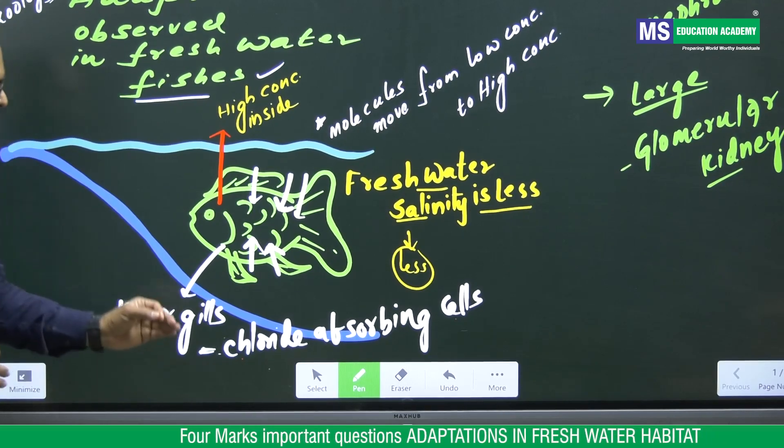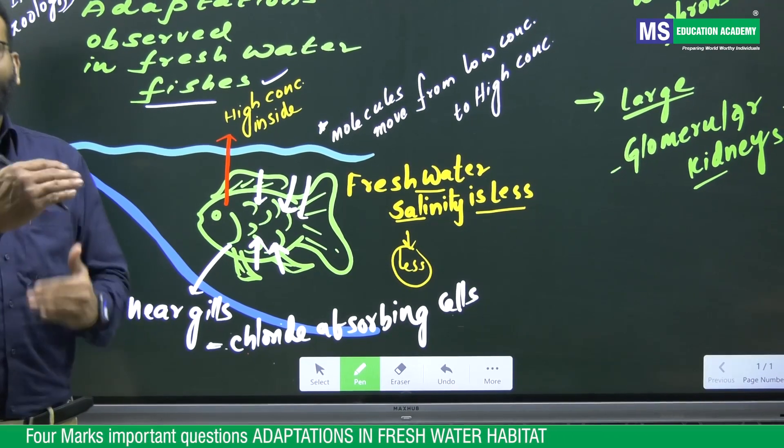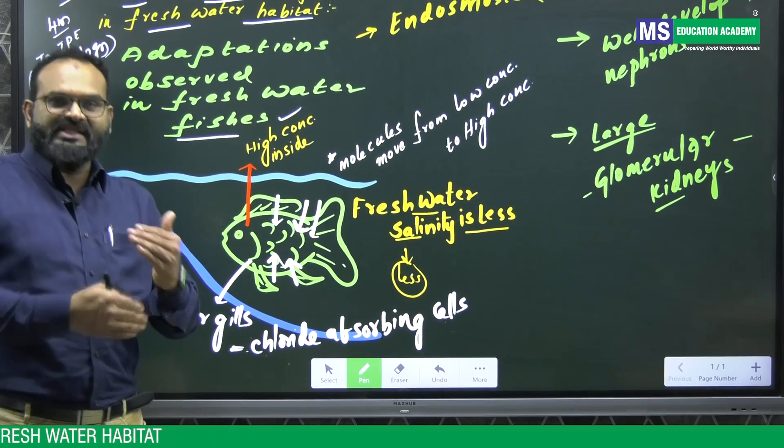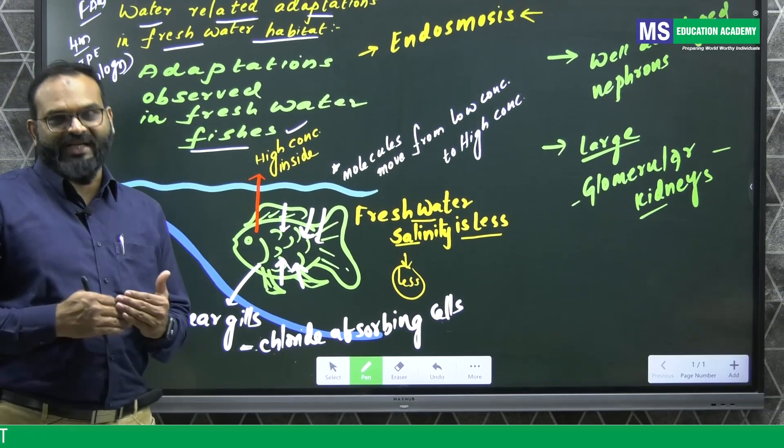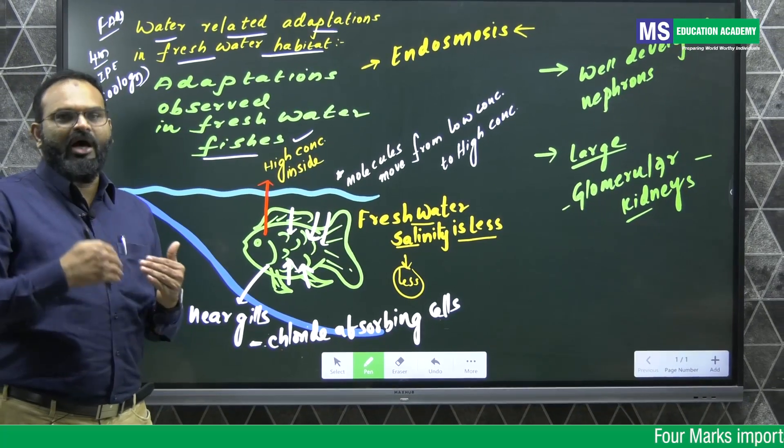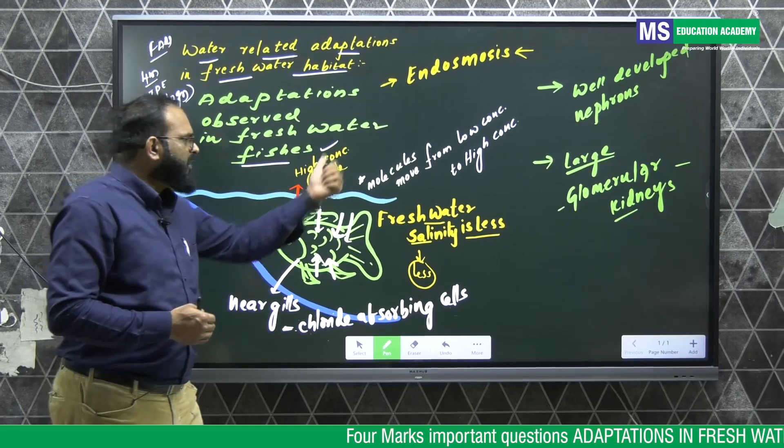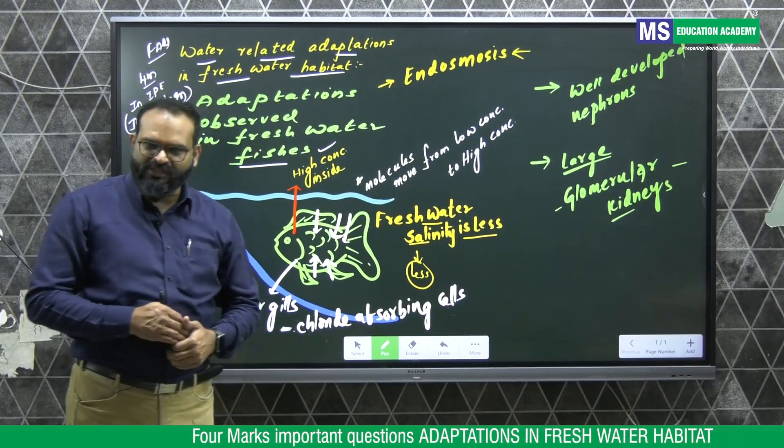This is how the fishes overcome osmoregulatory problems. This is how the freshwater fishes maintain osmoregulation and overcome the problem called endosmosis.